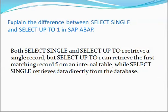Explain the difference between SELECT SINGLE and SELECT UP TO 1 ROWS in SAP ABAP. Both SELECT SINGLE and SELECT UP TO 1 ROWS retrieve a single record, but SELECT UP TO 1 ROWS can retrieve the first matching record from an internal table, while SELECT SINGLE retrieves data directly from the database.